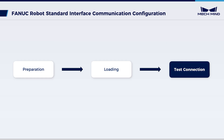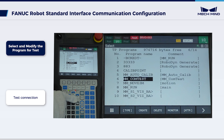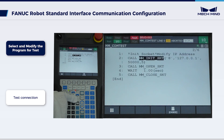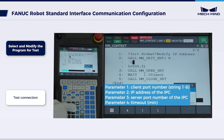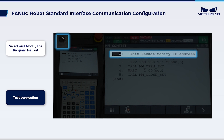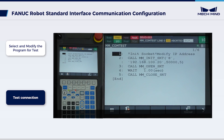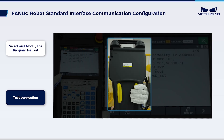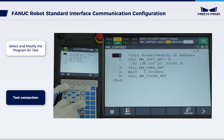Finally, run the program to test the communication between the vision system and the robot. On the Teach pendant, press Select to enter the program selection interface. Select MMContest and then press Enter to start the program. Configure the parameters of MMINIT SKT, which consist of four total parameters. Please adjust them based on your specific situation. When finished, move the cursor to the first line of the program. Turn the switch on the Teach pendant to ON and turn the switch on the controller to T1. Press the Step key to transition into Step mode. Press and hold either one of the enabling switches on the back of the Teach pendant, press and hold Shift, and continuously press Reset to dismiss all alarms. Then repeatedly press forward to manually run the MMContest program.